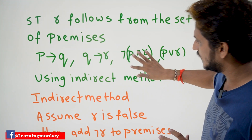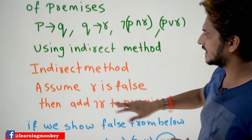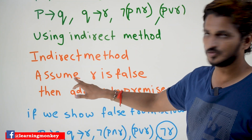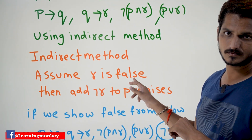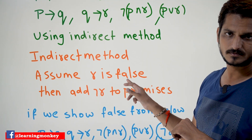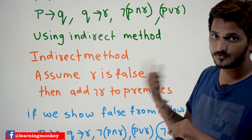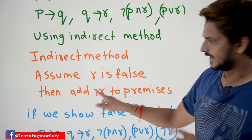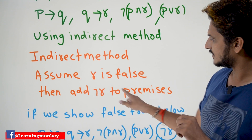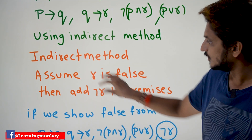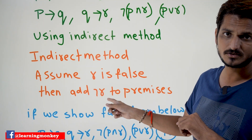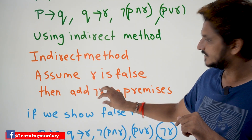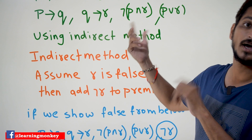Now indirect method — we need to understand indirect method. In indirect method, we assume that R is false. So we are assuming R is false, then add negation R to the premises. If you assume R is false, that means negation R has a true value. We can add this to our premises.